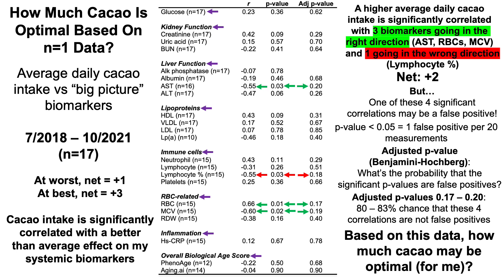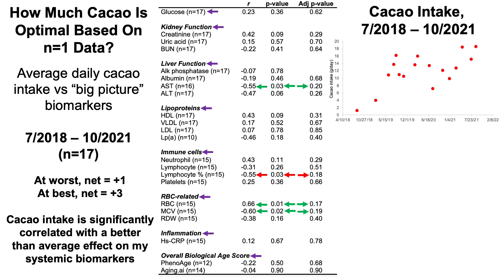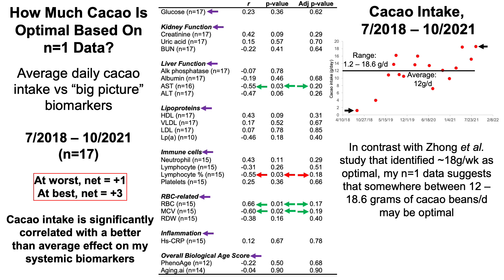Based on this data, how much cocoa may be optimal? Over the three-plus year period, average daily cocoa bean intake was 12 grams per day, with a range from about 1 gram to about 18–19 grams per day. Since the net score was positive, the speaker should eat somewhere between the average and highest intake. In contrast to the Zhang et al. study identifying 18 grams of chocolate per week as optimal, this N-of-1 data suggests that somewhere between 12 and about 19 grams of cocoa beans per day — not per week — may be optimal.